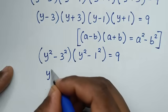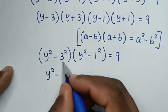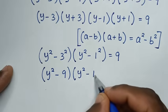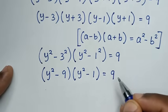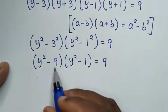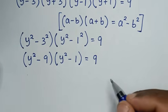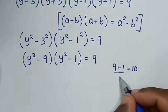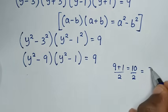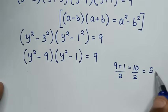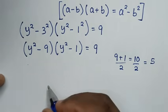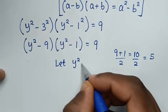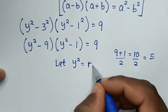Now here we have 9 and 1. Their average is (9+1)/2 = 5. So we let y² = r+5.